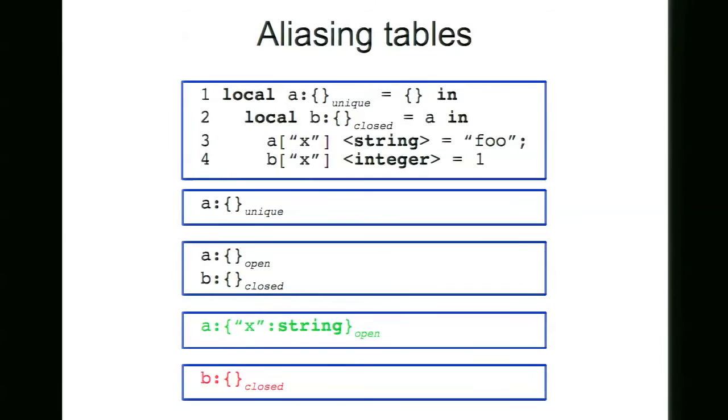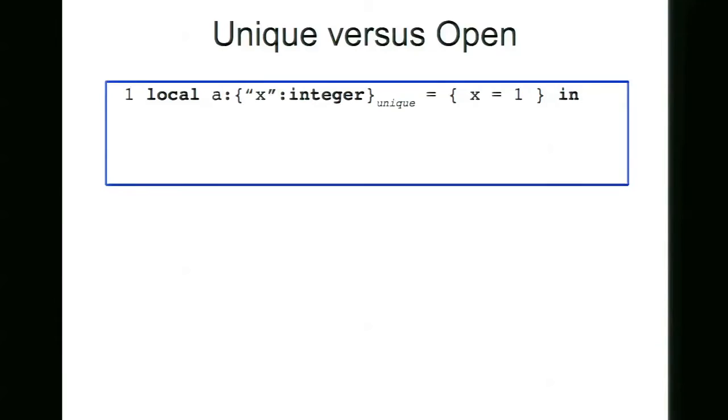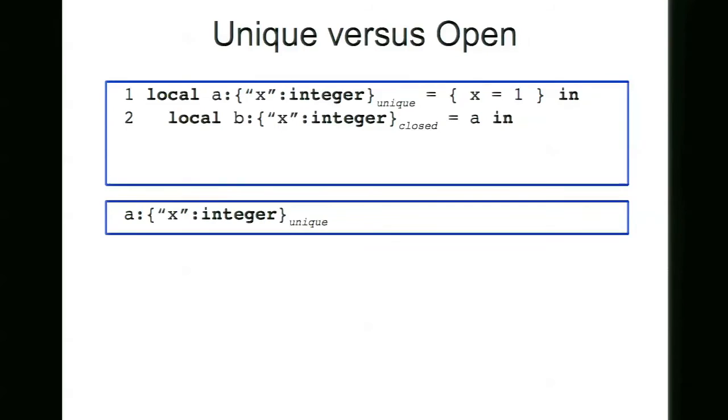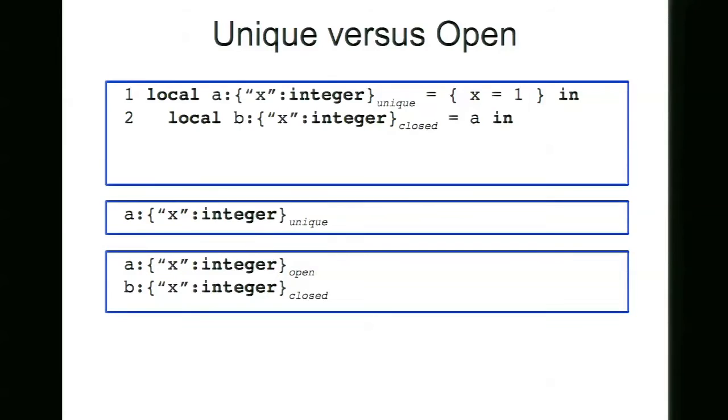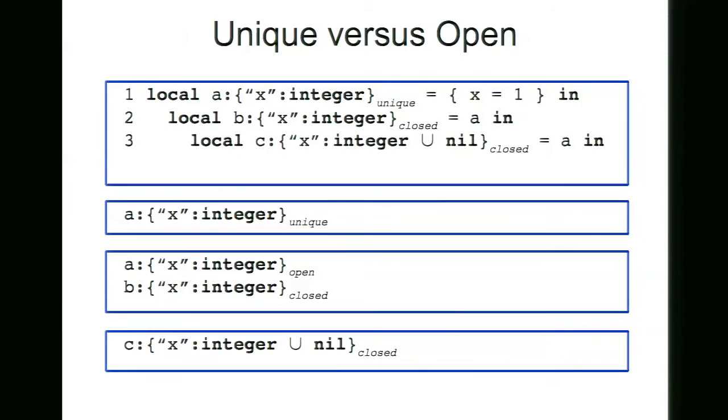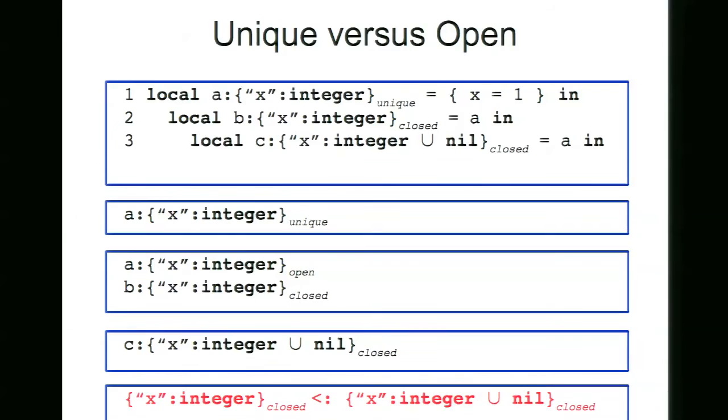As another example here, we are creating the variable A with just the field X of type integer, and then we are aliasing this variable to local B. So this works because both types match, both the result of A is closed and B are declaring also as closed. Type of A changes to open. And here, when we try to do another alias, when we try to alias A to C, this is not allowed, because we are trying to include the type unique inside that another table. So this is not allowed to prevent, for instance, changing the type of field X in C and having an effect in A.